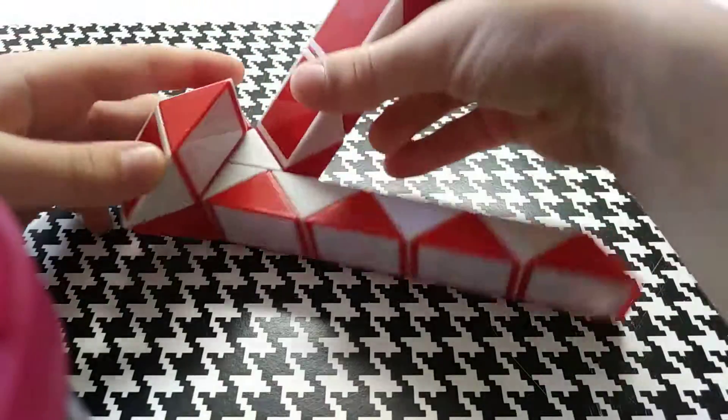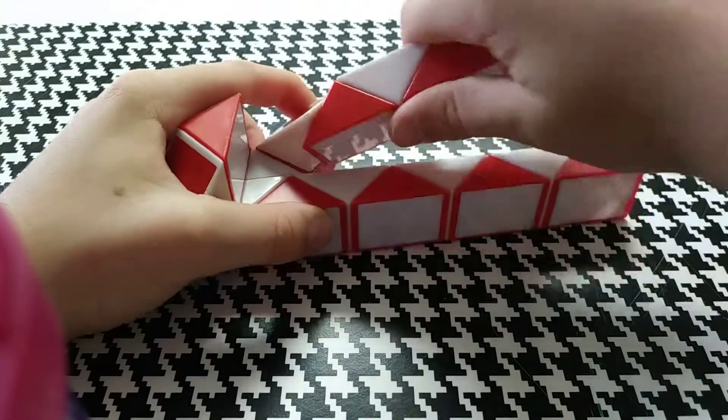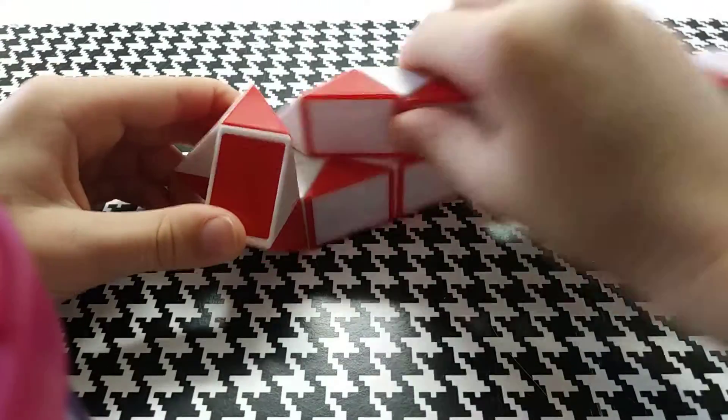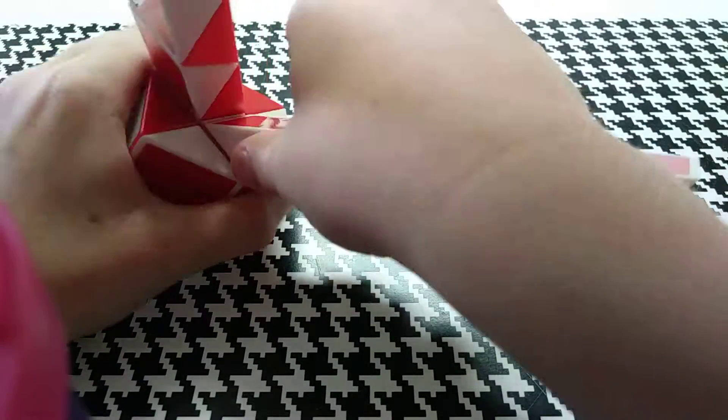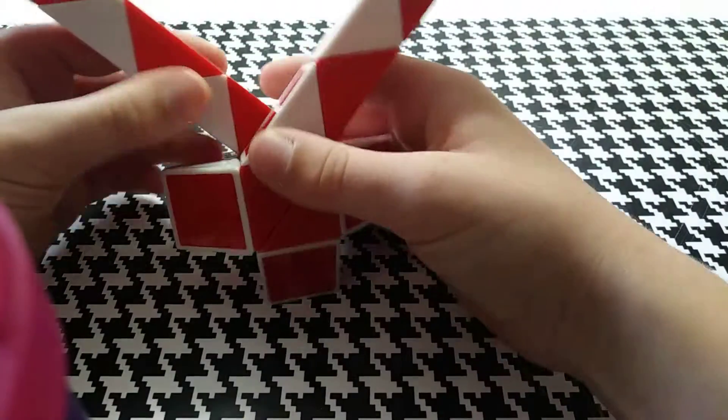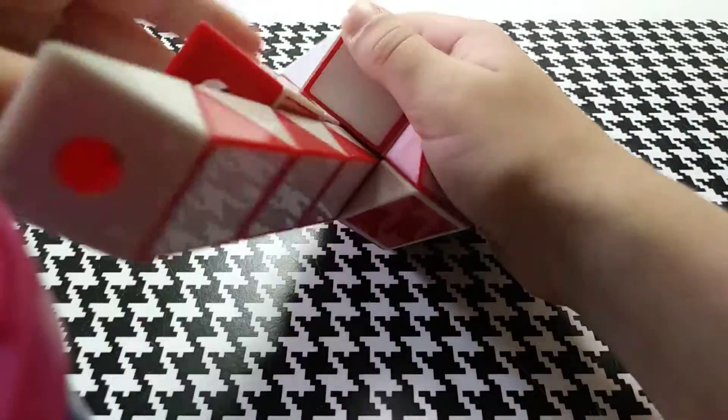And then do the same with this side, bring that down, get this red piece, flip it down, and then boom. Now you want to keep it like that, and you want to just do it one more time on this side like that.